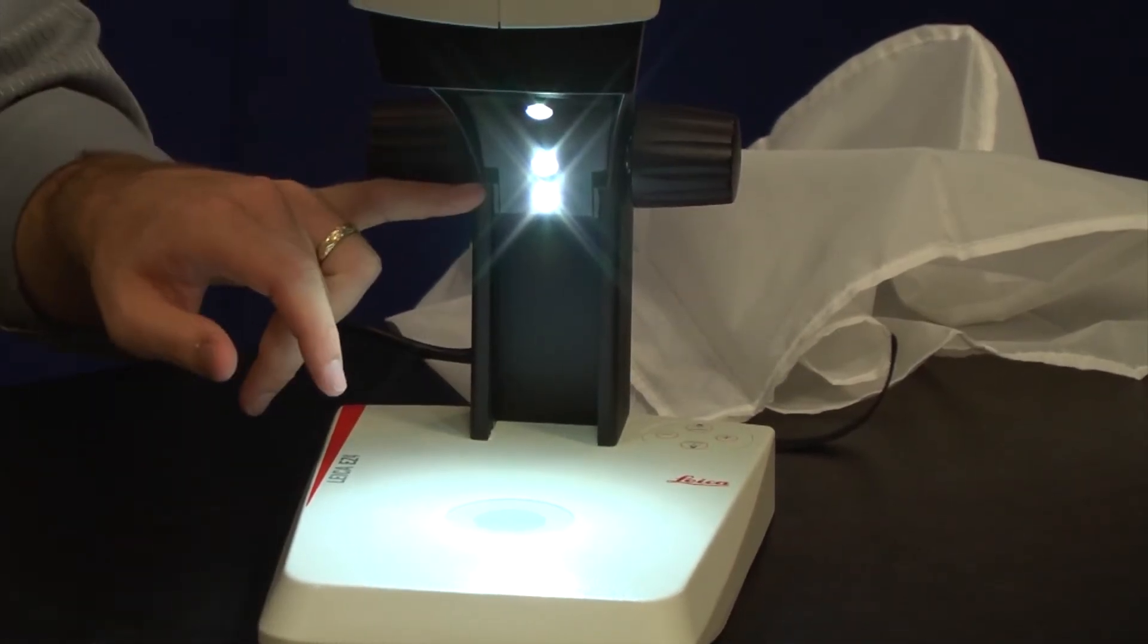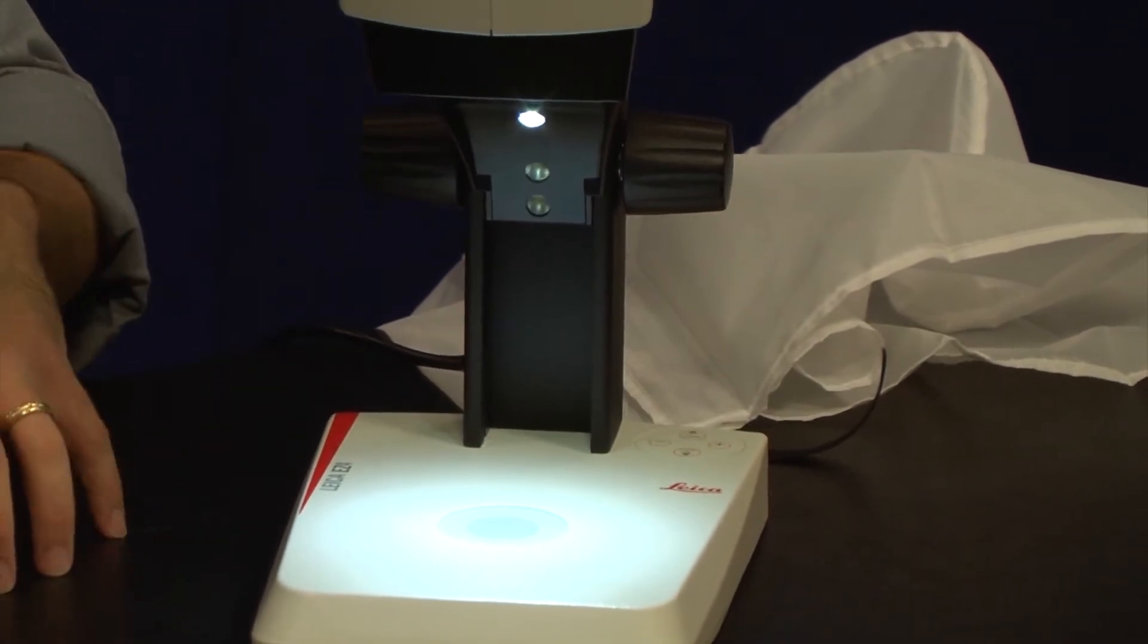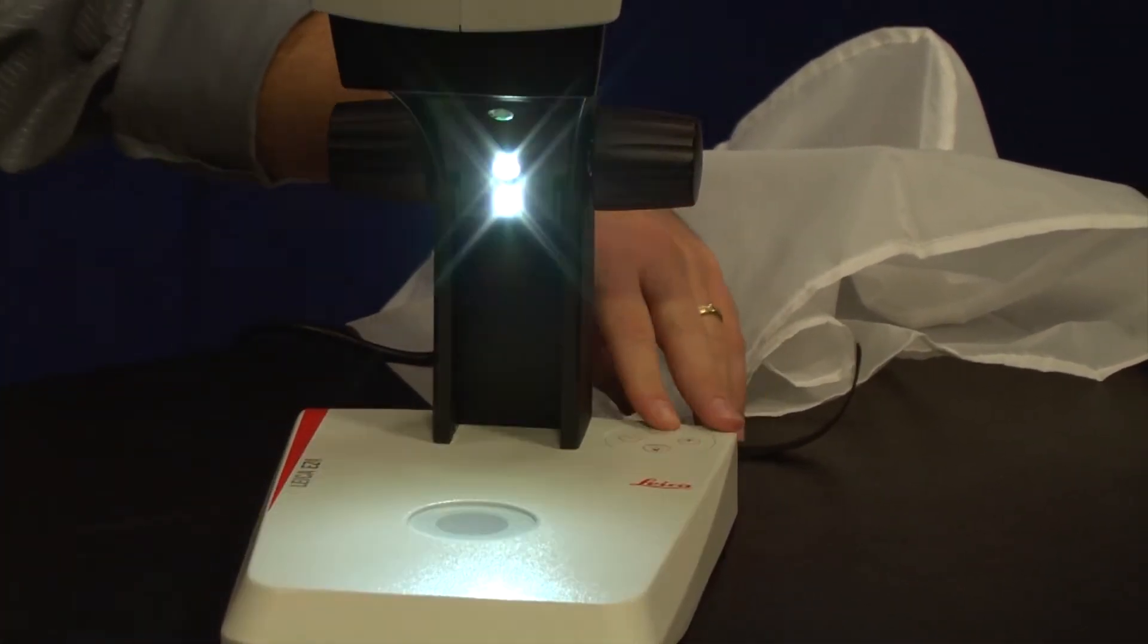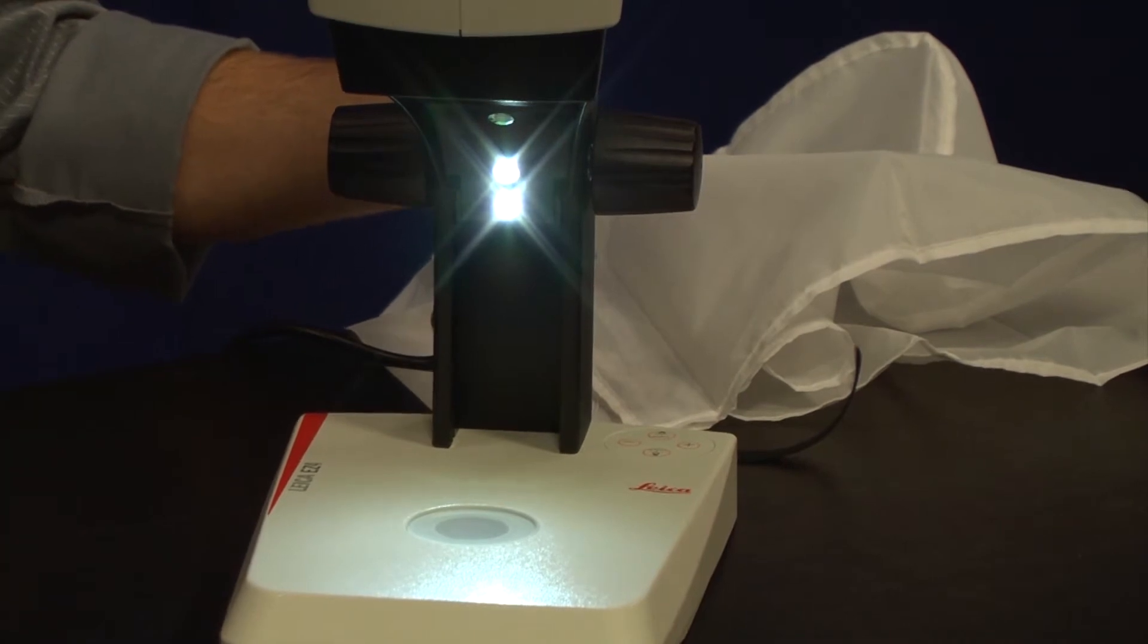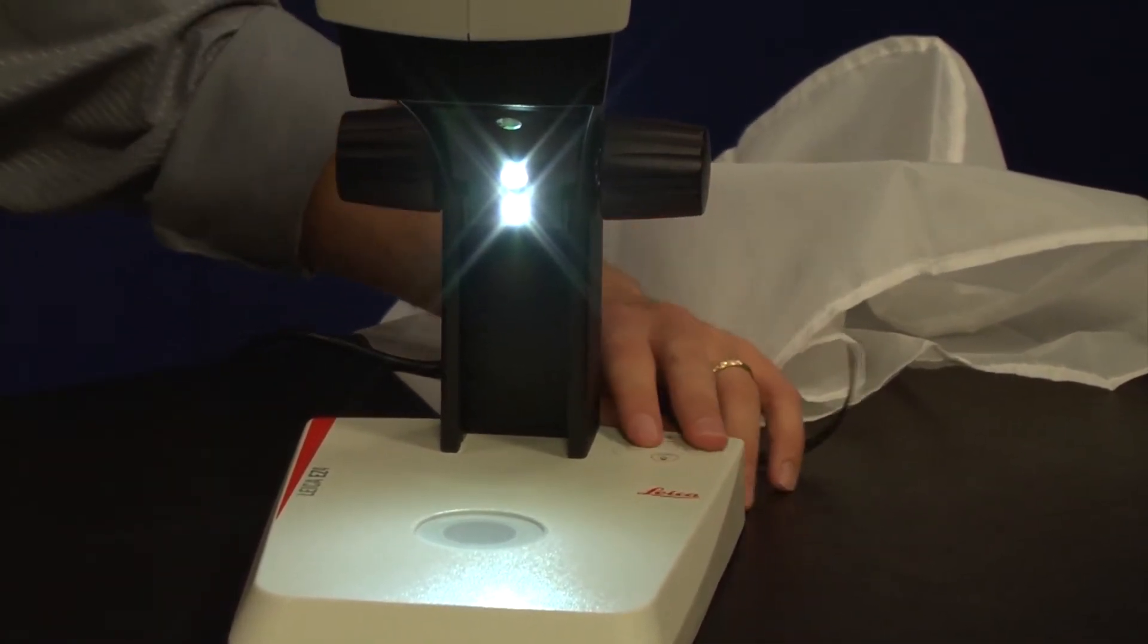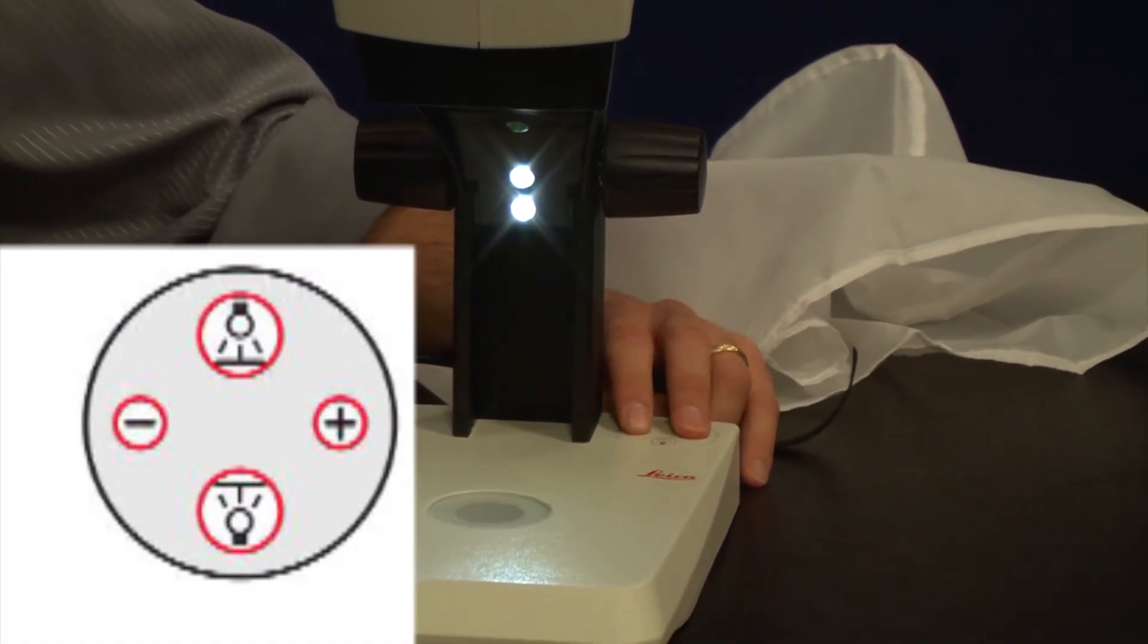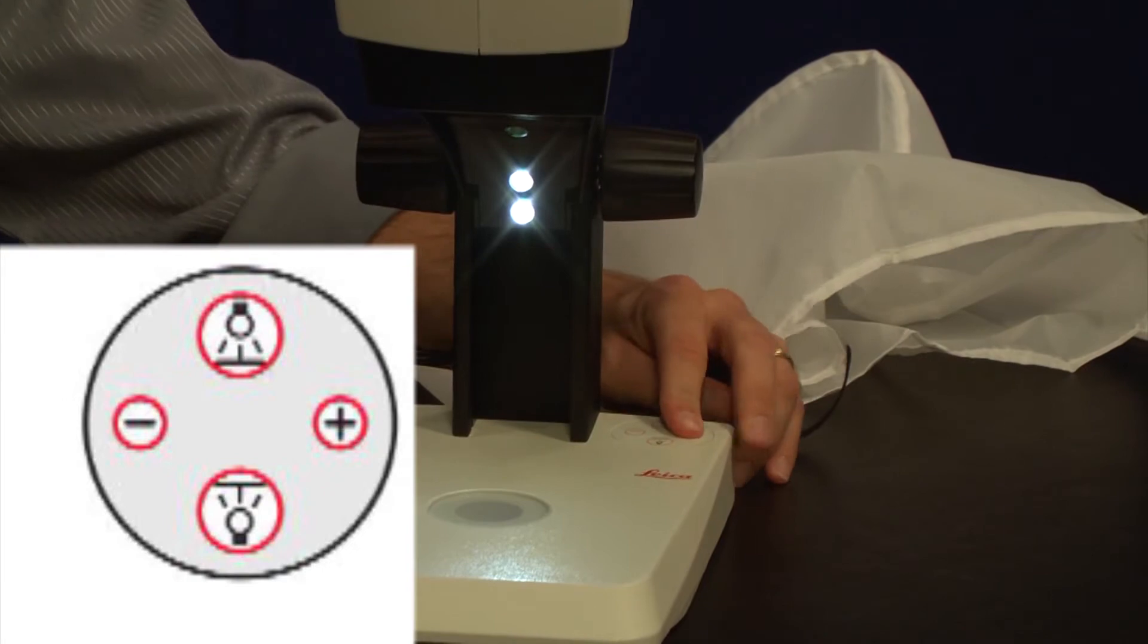So three options with the reflected light. We can have all five LEDs on, the top three on with light from straight down, or the back two on with light coming in from the back casting shadows. Just as before with the transmitted light, we have intensity control so we can turn the light down or turn the light up using the plus and minus buttons on the control panel.